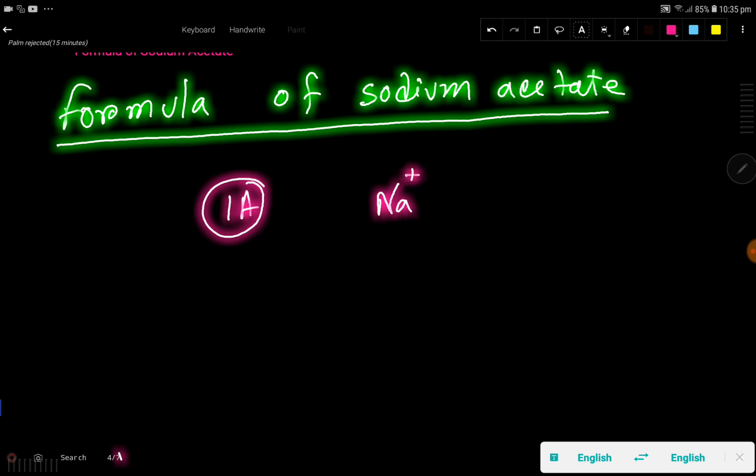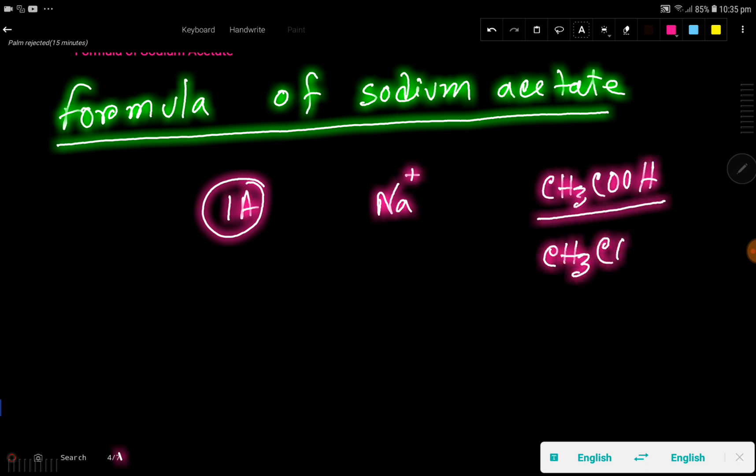And acetate - let me give you some basics. Acetate, this anion has come from acetic acid. This is acetic acid. If you deduct one hydrogen from acetic acid, then you will get acetate.